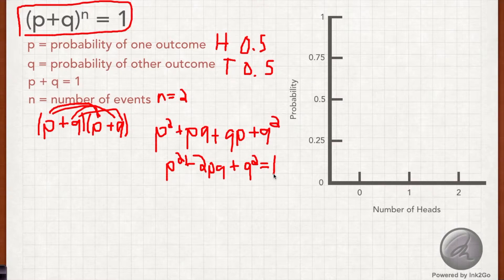Okay. So this is going to seem strange, but when I substitute these values of P and Q in here, this term is going to tell me the likelihood of 0 heads. This term is going to tell me the likelihood that I'll roll exactly 1 head, and this term will tell me the likelihood of 2 heads. So let's try it out.